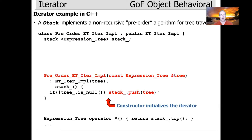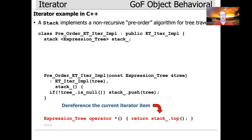We have our constructor, which takes an expression tree and passes it up to the base class, which will keep a reference to it so it can use it during the traversal. Then it initializes the stack to be initially empty. If the tree is not empty, we push the top item of the tree — the root — into the stack. That's the first item that's pushed on. The dereference operation, which gets the next item in the iteration sequence, simply returns the top of the stack.